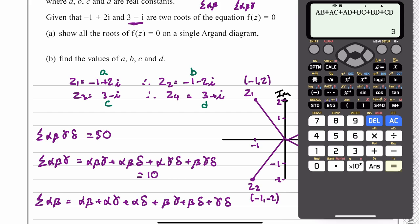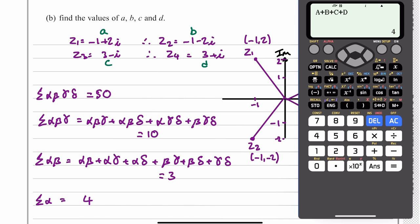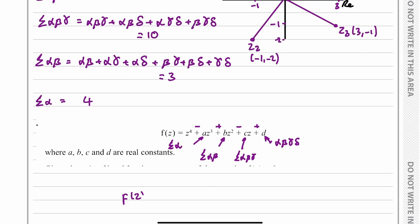Finally, the sum of the individual roots will be a plus b plus c plus d, and this gives us 4. Now we can substitute these back into our function. f of z will be equal to negative a which is negative 4, plus b which is a positive 3, negative c which is negative 10, and then plus d which is plus 50.